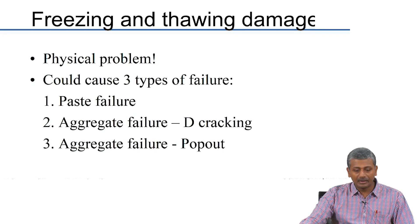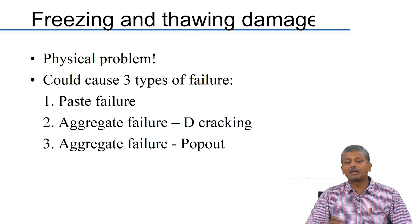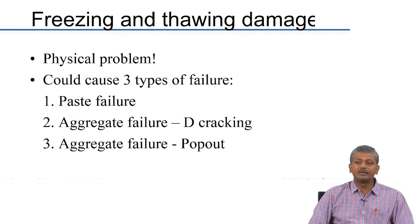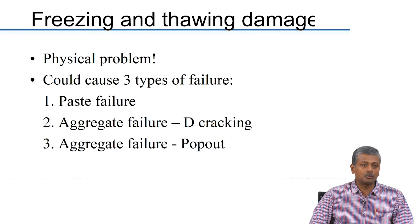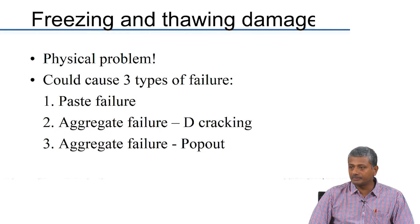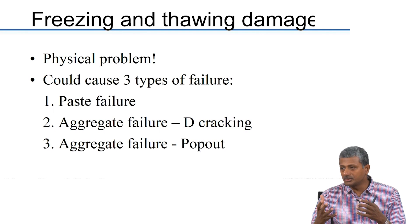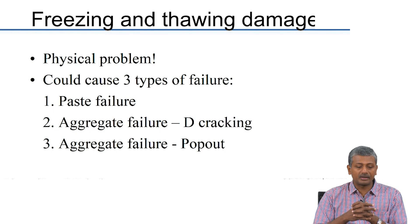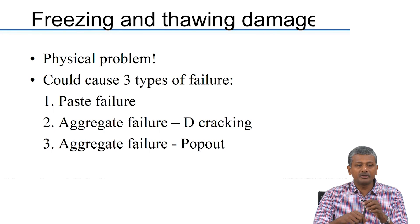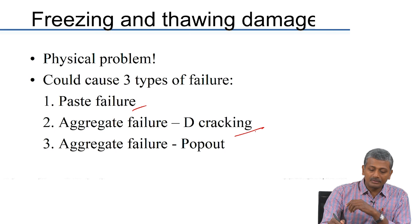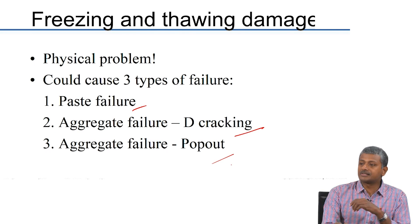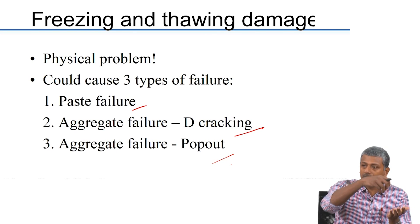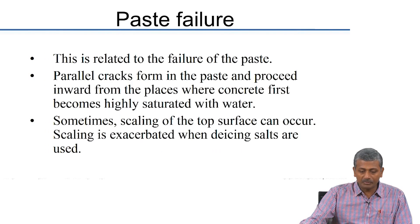Let us briefly talk about freezing and thawing, which is more of a physical problem with no chemical reactions involved. Here we are simply talking about conversion of water to ice and back to water. Freezing leads to expansion, and thawing leads to reduction in volume, causing heaving and contraction of the concrete that leads to cracking. There can be three types of failure: failure in the paste, D-cracking which is failure in the paste caused by expansive aggregates, or pop-out of the aggregate from the concrete surface.